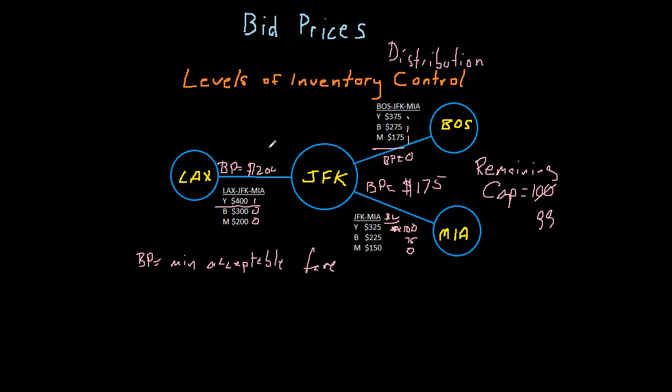But let's look at this example over here. The bid price is $200. If I accept this customer from LAX to Miami, and the customer is paying $400 in Y-class, is the incremental value to the network $400? Not really, because the bid price tells me that the opportunity cost for the seat I'm giving away is $200. So I'm not really gaining $400. I'm gaining $400 minus what I'm displacing on this leg. So the real network contribution in this case is only $200.